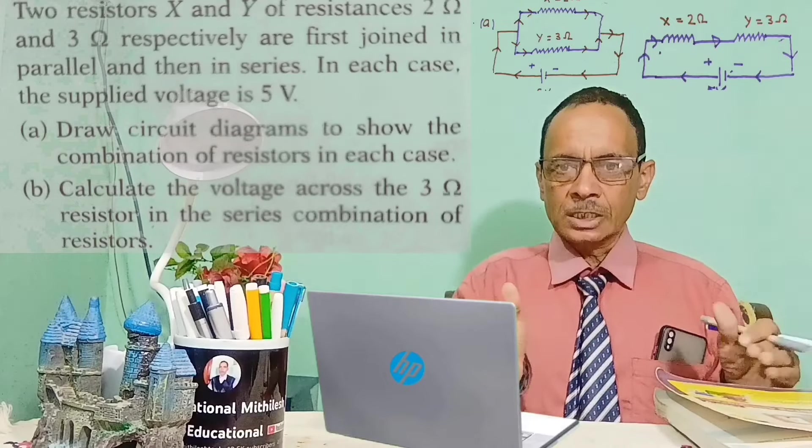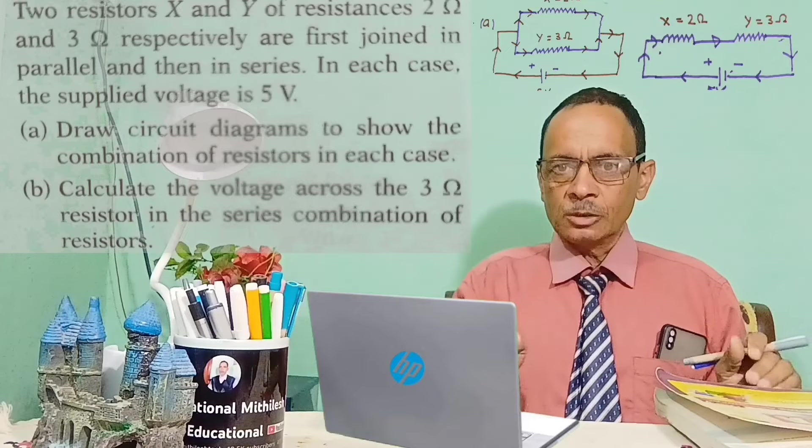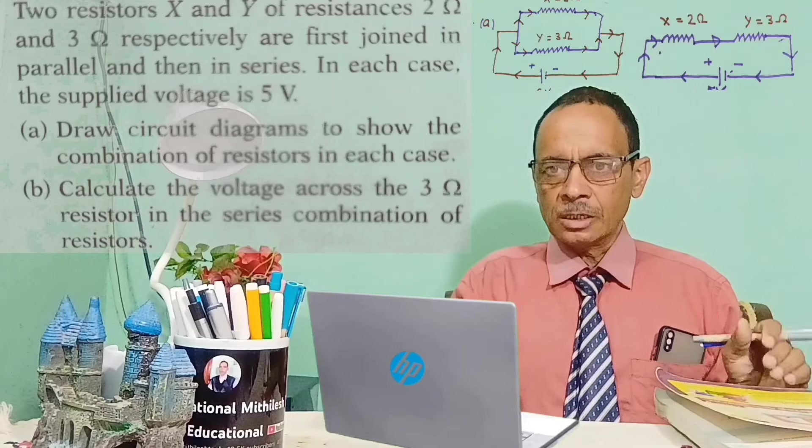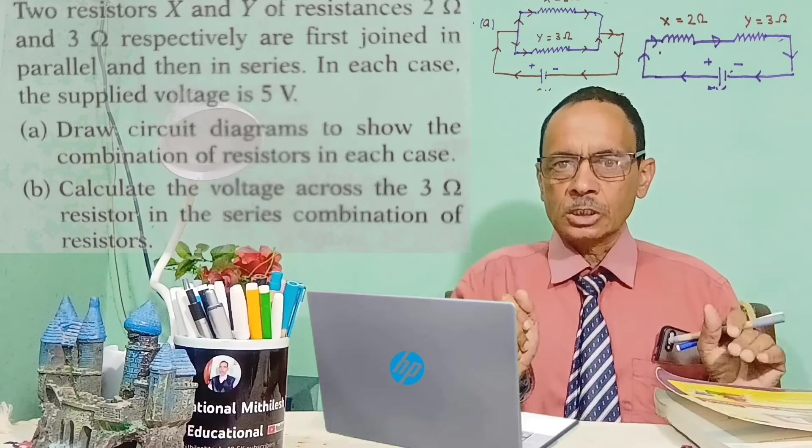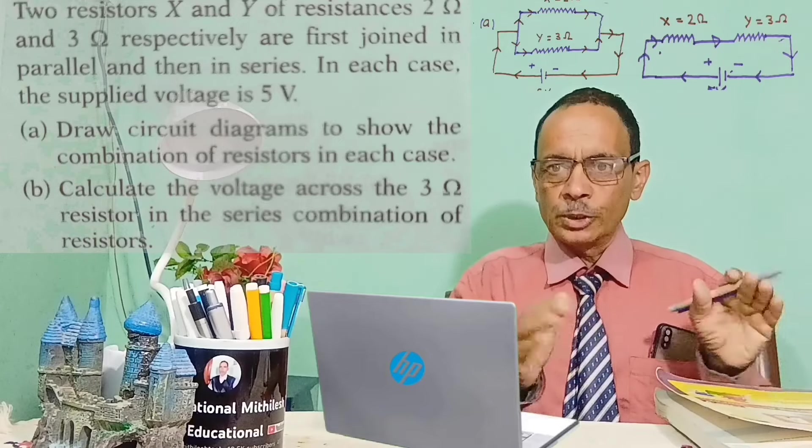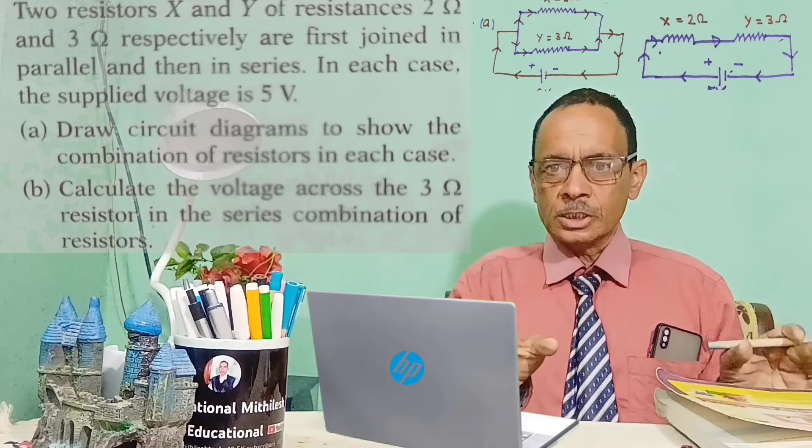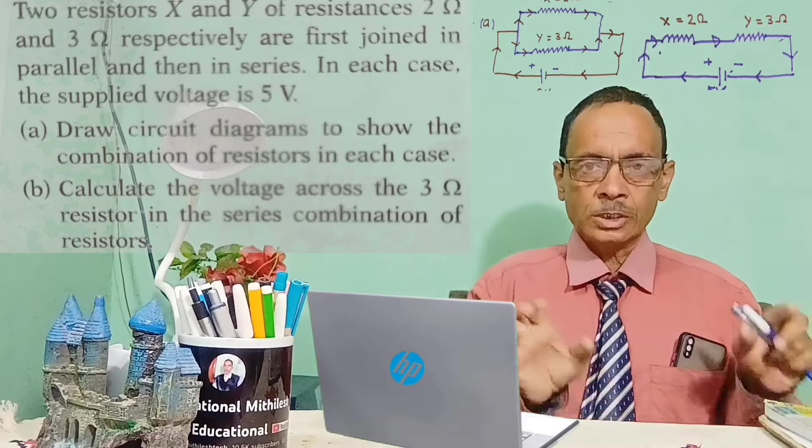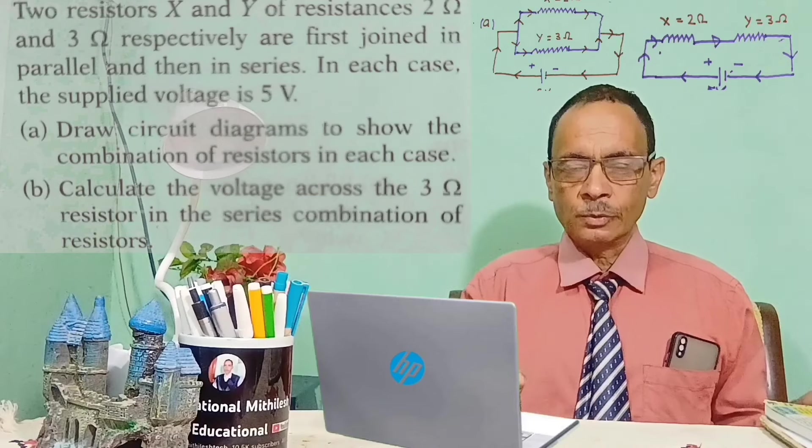We need to draw a circuit diagram for two conditions. Then we need to calculate the voltage across the 3 ohm resistor in the series combination of resistors. Let us move towards the board and solve it.